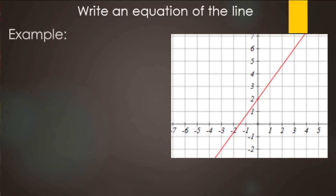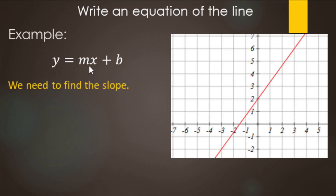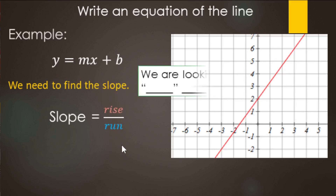Let's look at an example. We have a graph and it's easy to see what the y-intercept is, so we're going to use slope-intercept form. We know the y-intercept, so we use slope-intercept form. The only other piece of information we need is the slope. So remember, slope is rise over run. In order to find the rise over run, we are looking for nice points on the graph, starting from left to right.